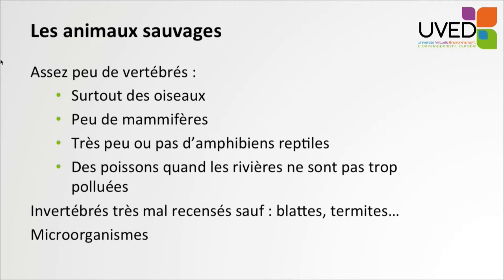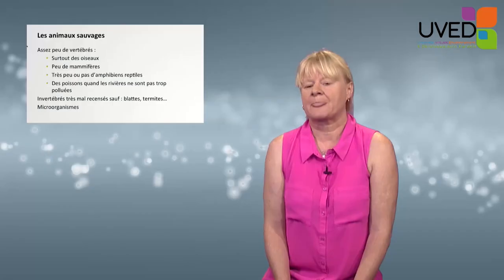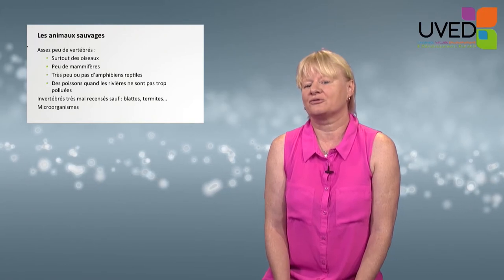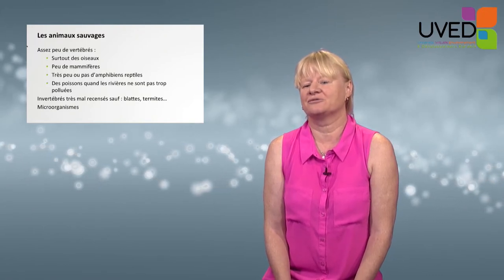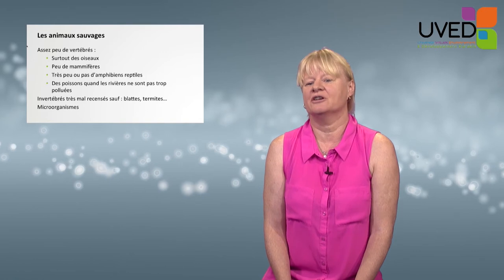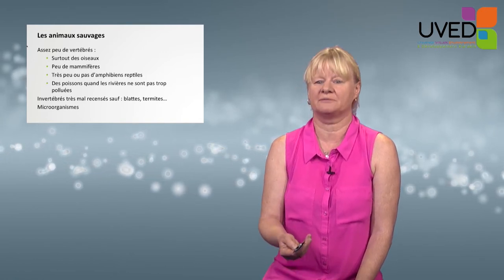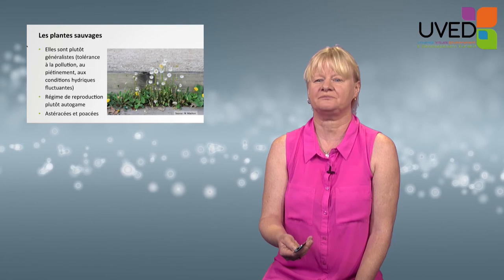There are wild animals, though they are not really well listed. We know there are very few vertebrates — birds essentially, some small mammals, no reptiles or amphibians, and fishes when rivers are not too polluted. Regarding invertebrates, we know very little, except when they are considered pests, such as cockroaches and termites. There are also some microorganisms.